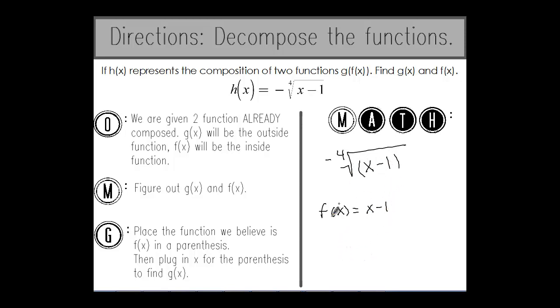Then I take my parentheses and I replace them with x to find g of x. So g of x would be negative radical 4, x.